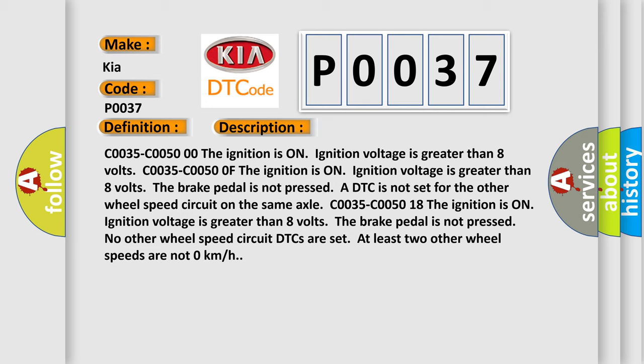C0035-C0050 18: The ignition is ON, ignition voltage is greater than 8 volts. The brake pedal is not pressed. No other wheel speed circuit DTCs are set. At least two other wheel speeds are not 0 km/h.